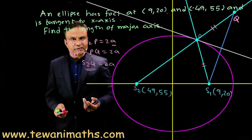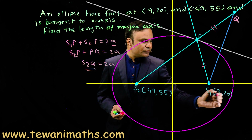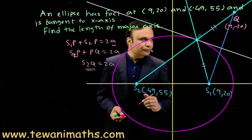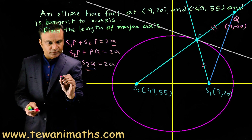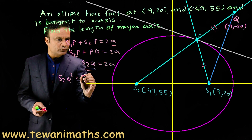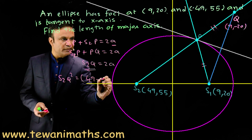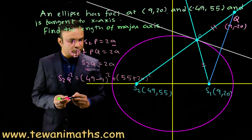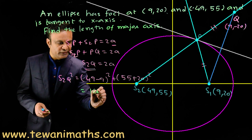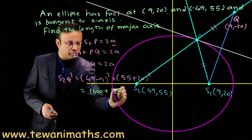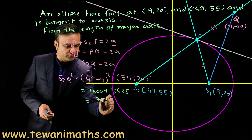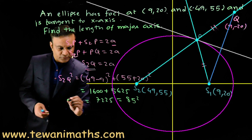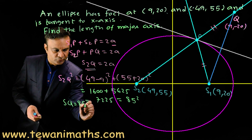Now we can find the coordinates of point Q. The image of S1 = (9, 20) in the x-axis is Q = (9, −20). Using the distance formula: S2Q² = (49 − 9)² + (55 + 20)² = 40² + 75² = 1600 + 5625 = 7225. This is a perfect square of 85.